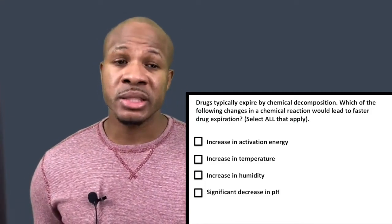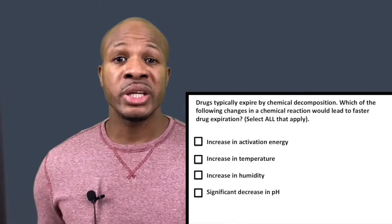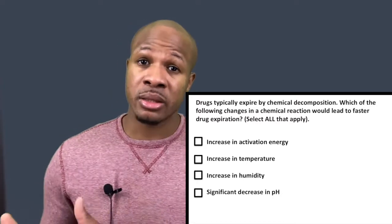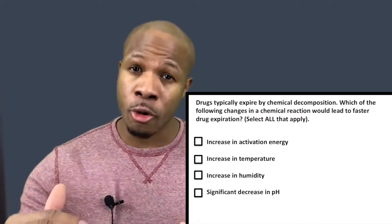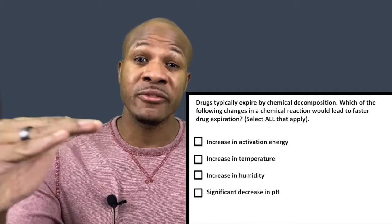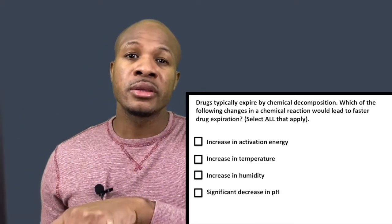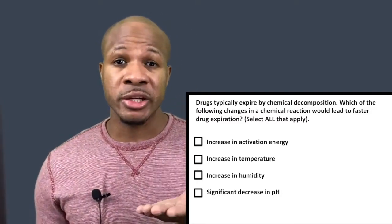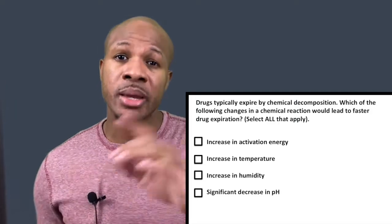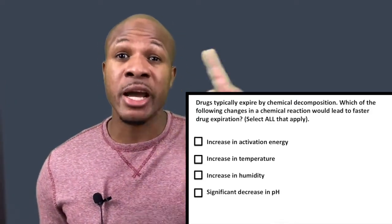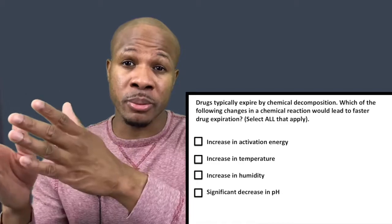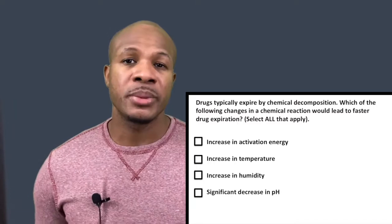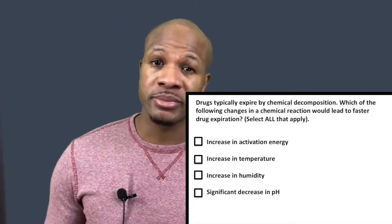Answer choice A says: increase in activation energy. Activation energy is essentially the potential energy barrier that a reaction has to overcome for the reaction to occur. If you have a very low activation energy, it's easy for the reaction to occur. But if you increase the activation energy, you make it harder for that chemical reaction to occur because it has to cross a higher barrier. So answer choice A will be incorrect because it would actually make the drug expire slower, not faster.